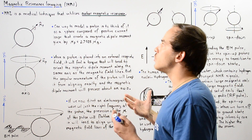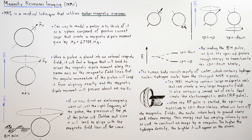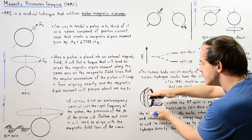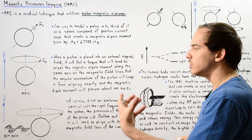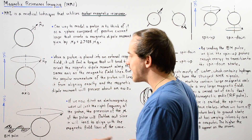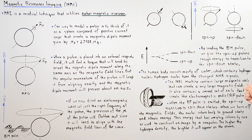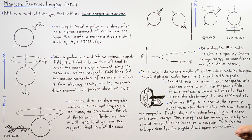The MRI machine contains large magnetic coils that create a very large static magnetic field — usually from one to five Tesla. The patient is placed on a bed and moved into the machine. A second set of coils creates the electromagnetic pulse discussed earlier, known as the radio frequency pulse or RF pulse. These coils are sometimes called the RF coils.